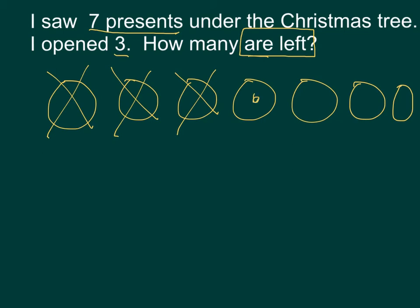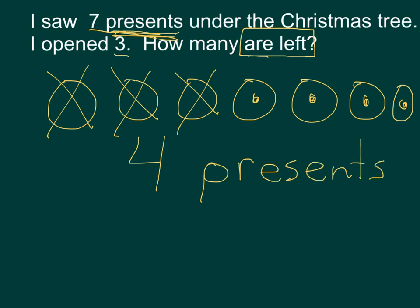How many are left? One, two, three, four. Four are left. Let's think about a label — what were we talking about in the story? Presents. I know how to spell it because it's up in my subtraction story. Four presents. Let's check your number sentence: did you have seven minus the three that you opened equals four? Great job.